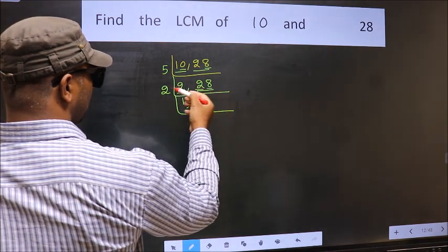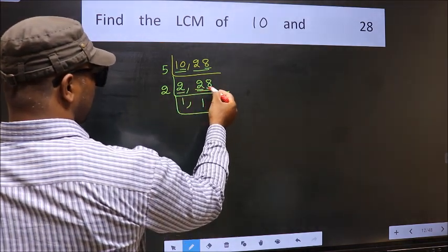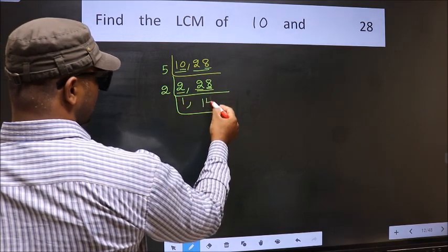First number, 2. When do we get 2 in 2 table? 2 times 1 is 2. The other number, 8. When do we get 8 in 2 table? 2 times 4 is 8.